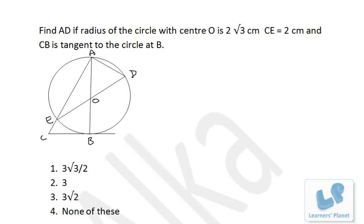Let's try this problem based on geometry. Find AD if radius of the circle with center O is 2√3 cm, CE is 2 centimeters, and CB is tangent to the circle at B. That means this must be 90 degrees because the angle between radius and tangent is always 90 degrees.